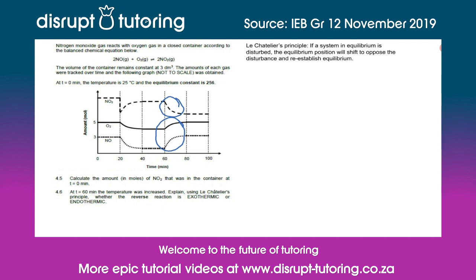According to Le Chatelier's principle, the favored reaction will oppose the disturbance, meaning it needs to reduce the heat caused by the increase in temperature. We know that endothermic reactions take in heat, so since the reverse reaction is favored by the increase in temperature, we can say that the reverse reaction is endothermic.